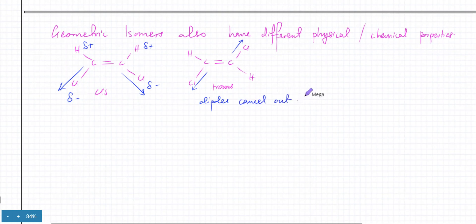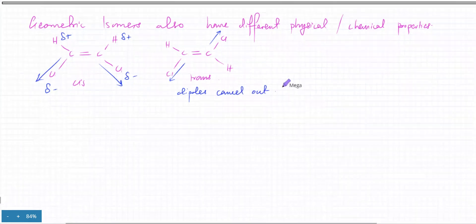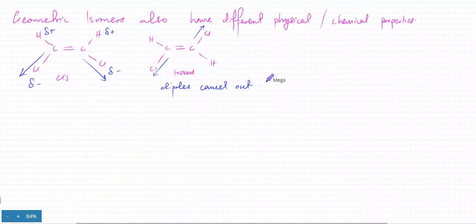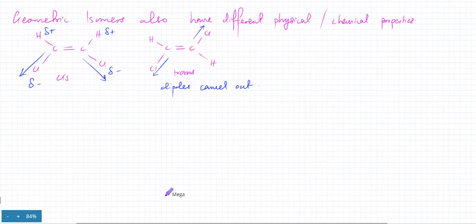So geometric isomers have different physical and chemical properties because of the arrangement, even though the connectivity is the same. They have different reactions, different speeds in which they react. One is going to react, the other one is not going to react. And there's one place where this shape, this property of having a different shape, matters a lot.